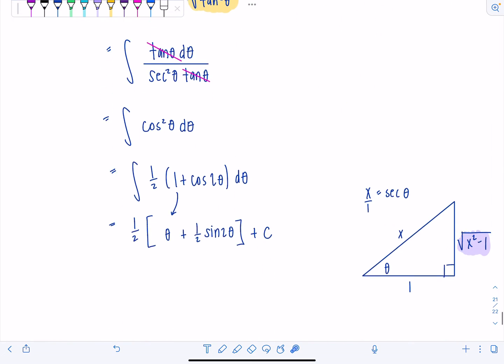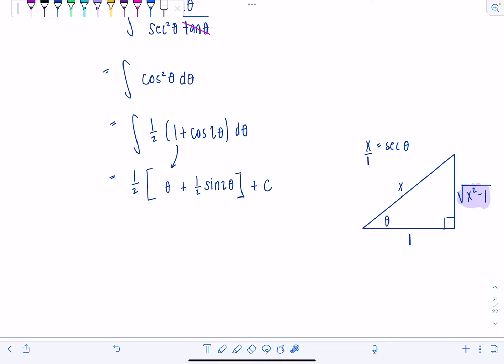And so now in order to go back to writing things in terms of x, I'm going to replace theta with secant inverse of x. Yes, secant inverse of x is theta. But what do we do about this sine two theta?